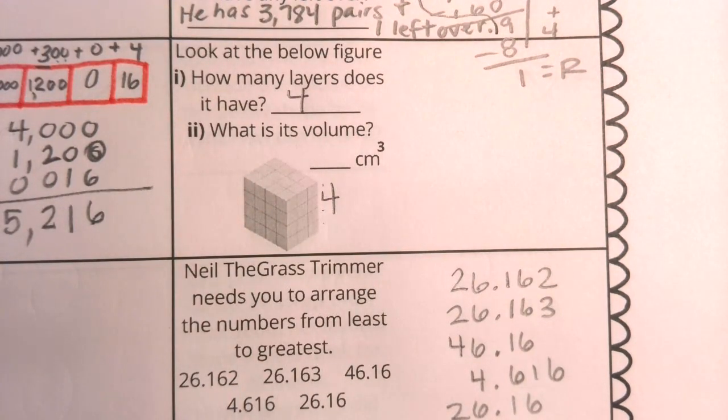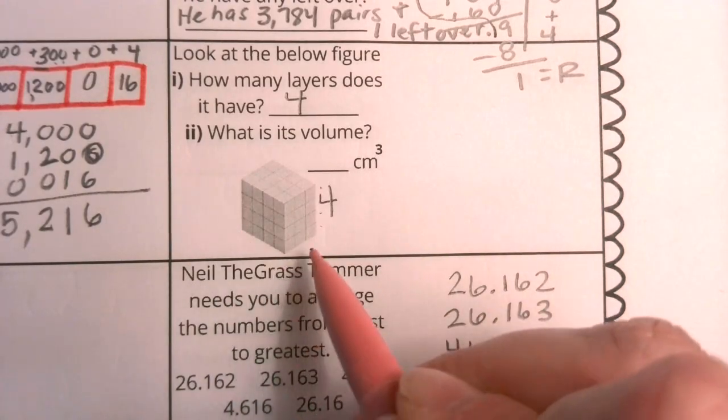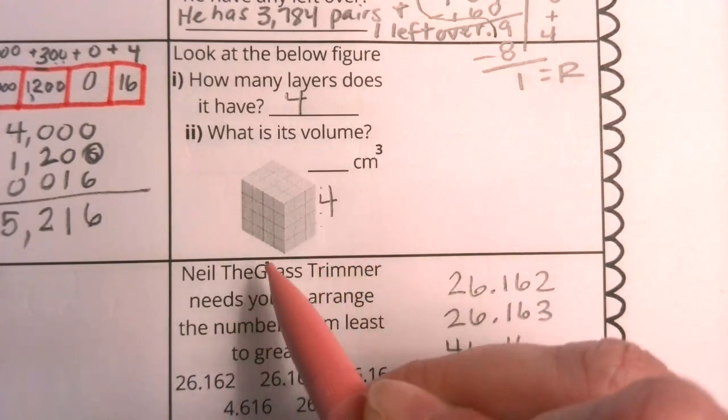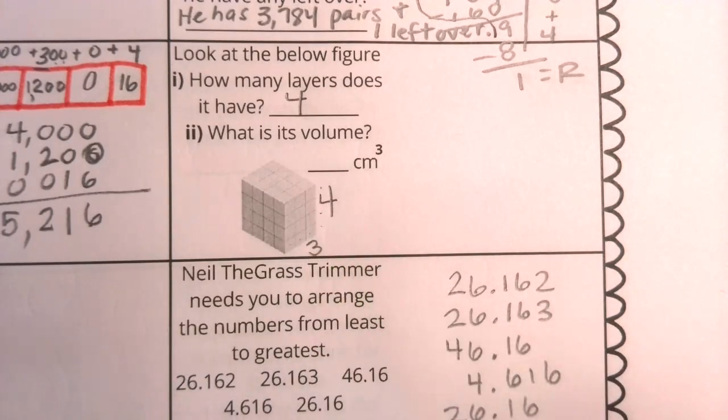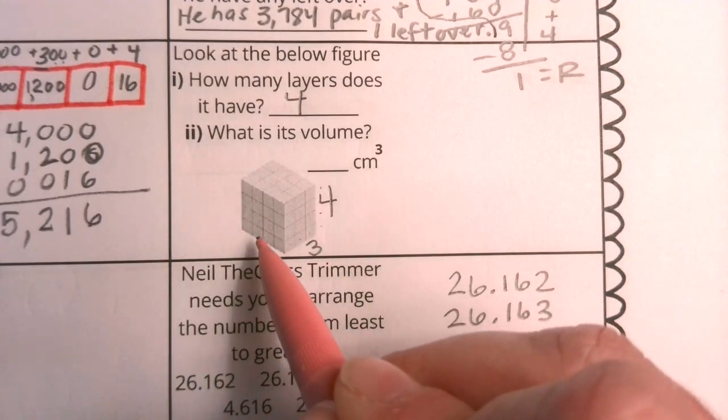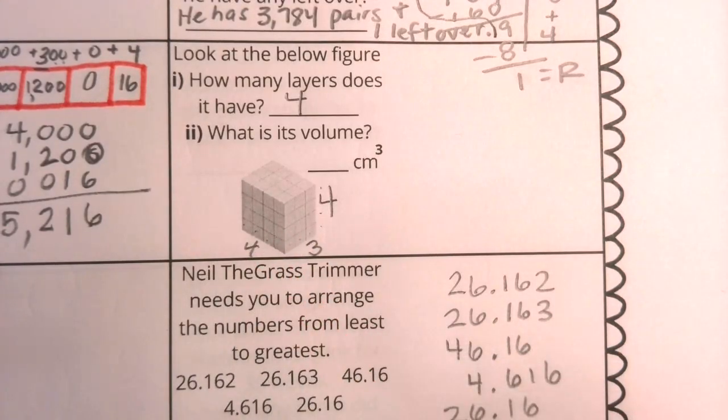Now it asks what the overall volume is. So now let's analyze the length and width of this prism as well. We can count them one, two, three. This has a width of three. Let's take a look here. One, two, three, four. This has a length of four.